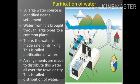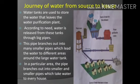Arrangements are made to distribute this water all over the town or city. This is called distribution of water. Water tanks are used to store the water that leaves the water purification plant. According to need, water is released from these tanks through big pipes. These pipes branch out into many smaller pipes which lead the water to different areas around the large water tank.